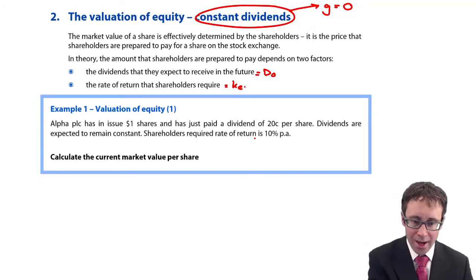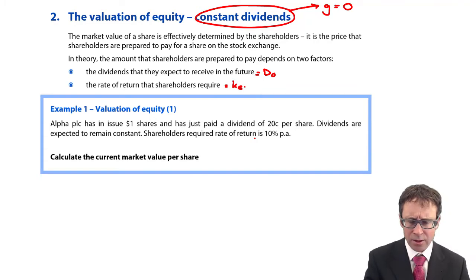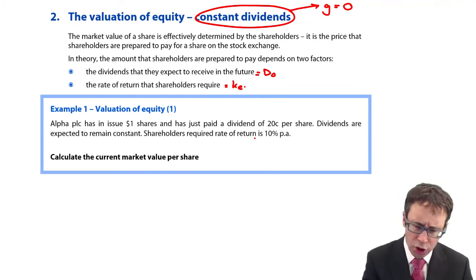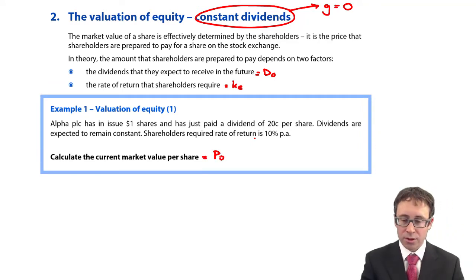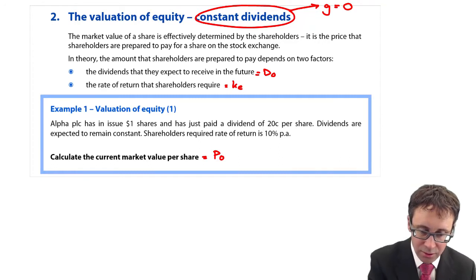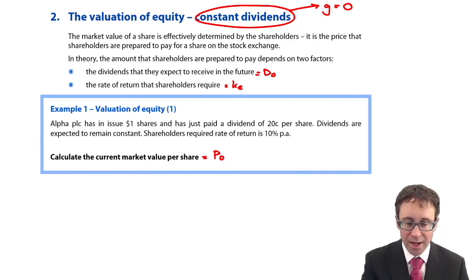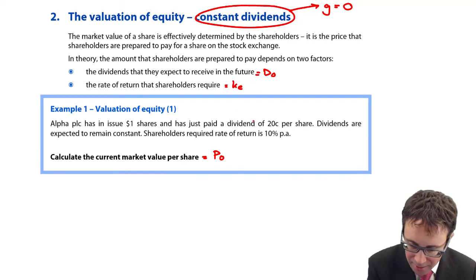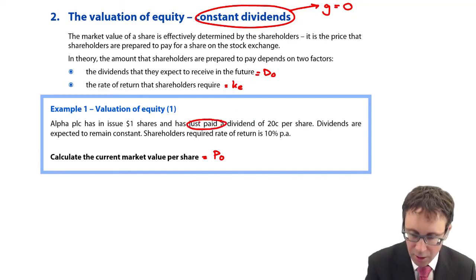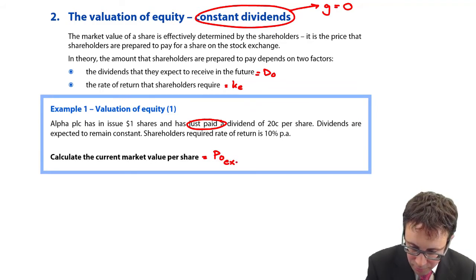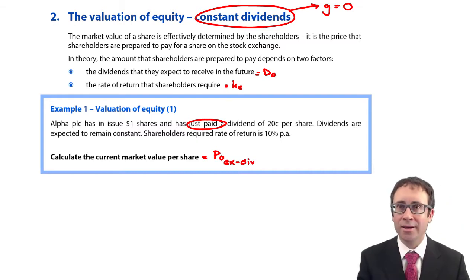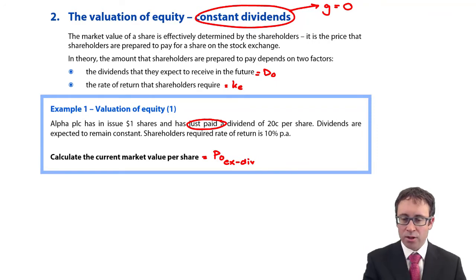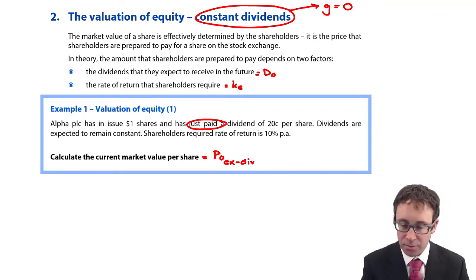Let's just crunch the numbers. It wants us to calculate the current market value per share — that's P0. Alpha PLC has in issue $1 shares and has just paid a dividend. If you have just paid, remember, that is looking at your price ex-dividend — XDIV. So, in the first few examples, we're going to look at our XDIV valuation. We are told that we have just paid a dividend of $0.20 per share.